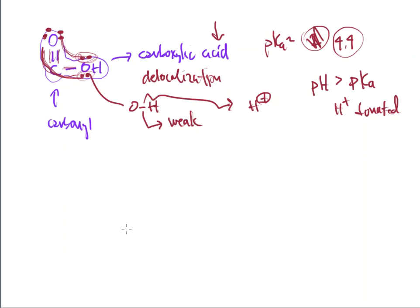We talked about transcinnamic acid in the previous video. By definition it is an acid, so it has a hydrogen that can be spit off. That hydrogen will dissociate at pH 4.4, so if the pH is greater than 4.4, it's going to turn into an acid and spit off a proton for the reaction to use.